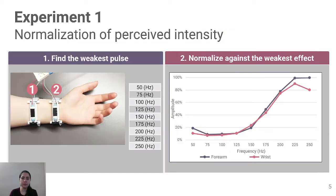The goal of the first experiment was to eliminate the effect of perceived intensity. We first found the weakest vibration pulse across the frequency and locations. We then normalized the perceived intensity at all frequencies at the forearm and wrist to match this weakest vibration pulse.